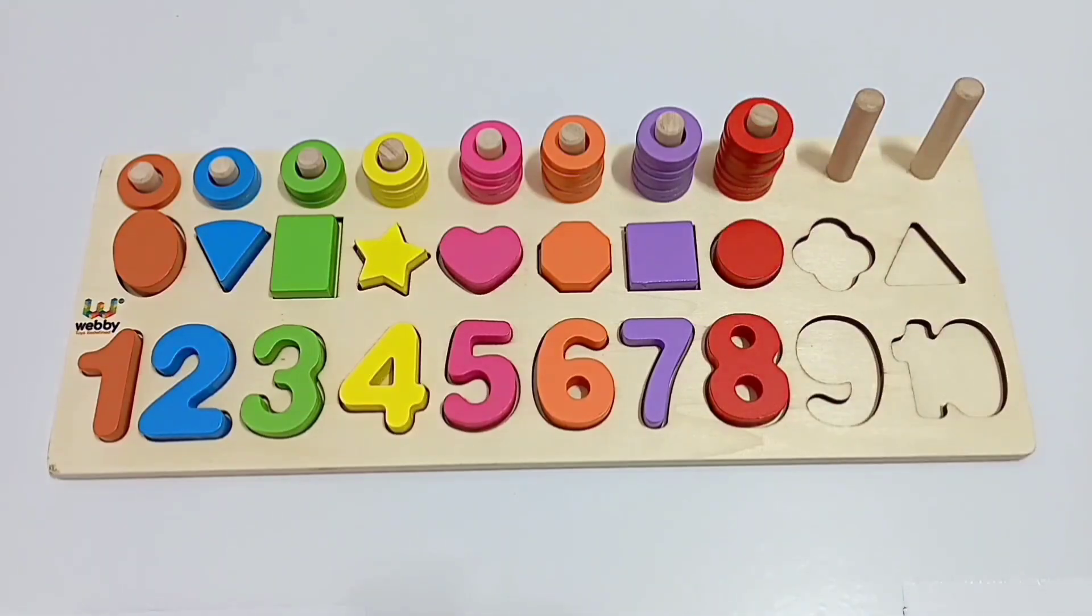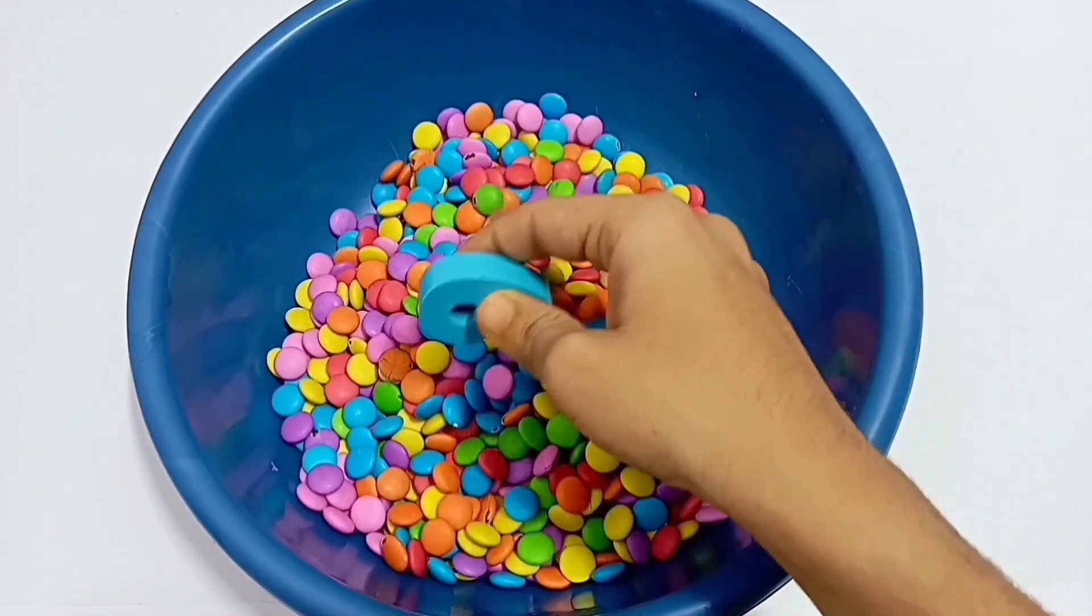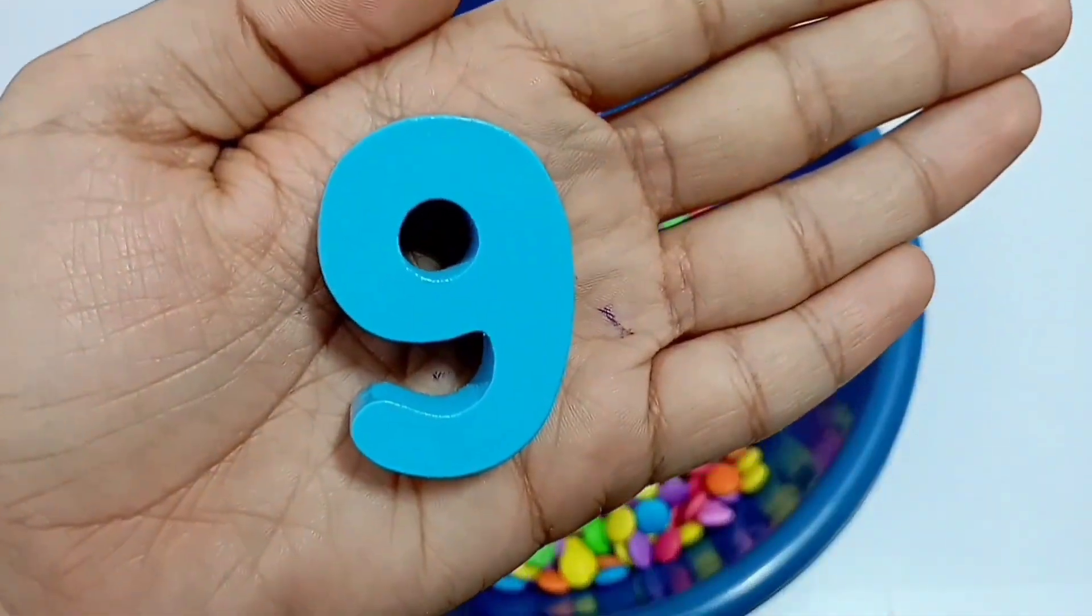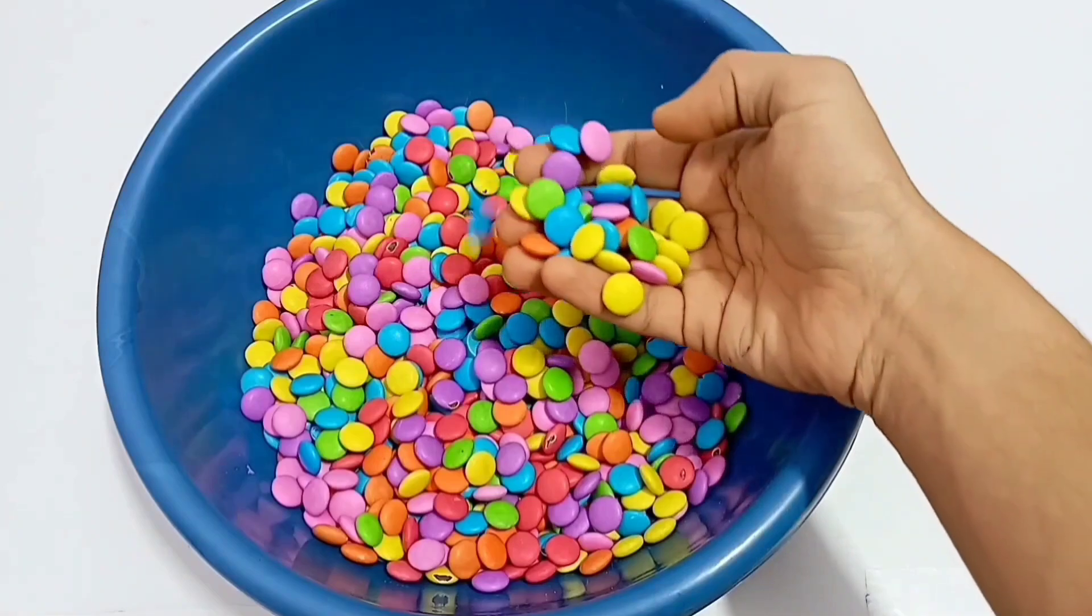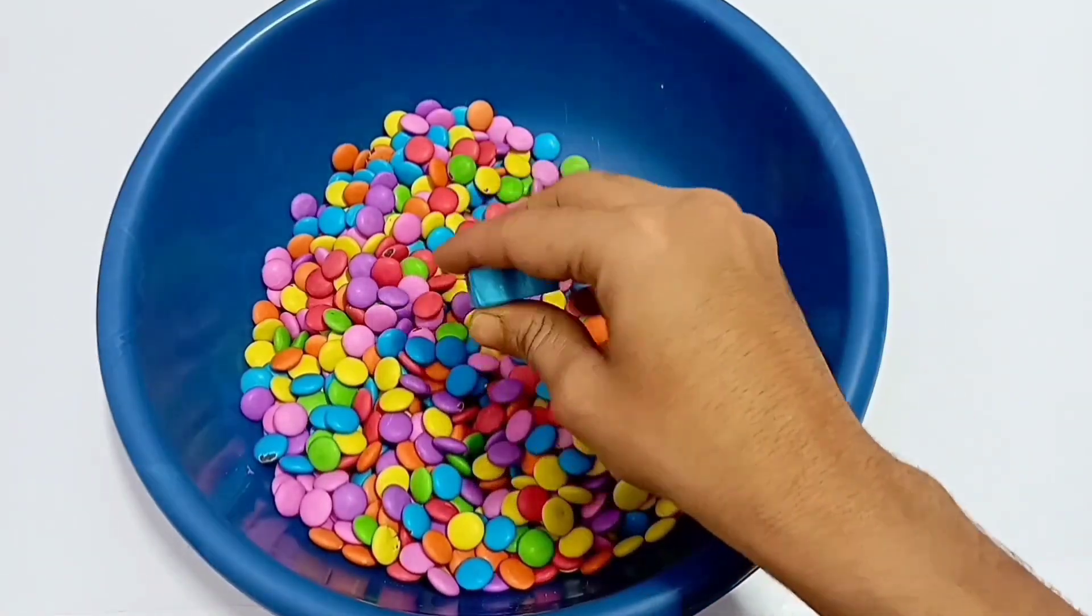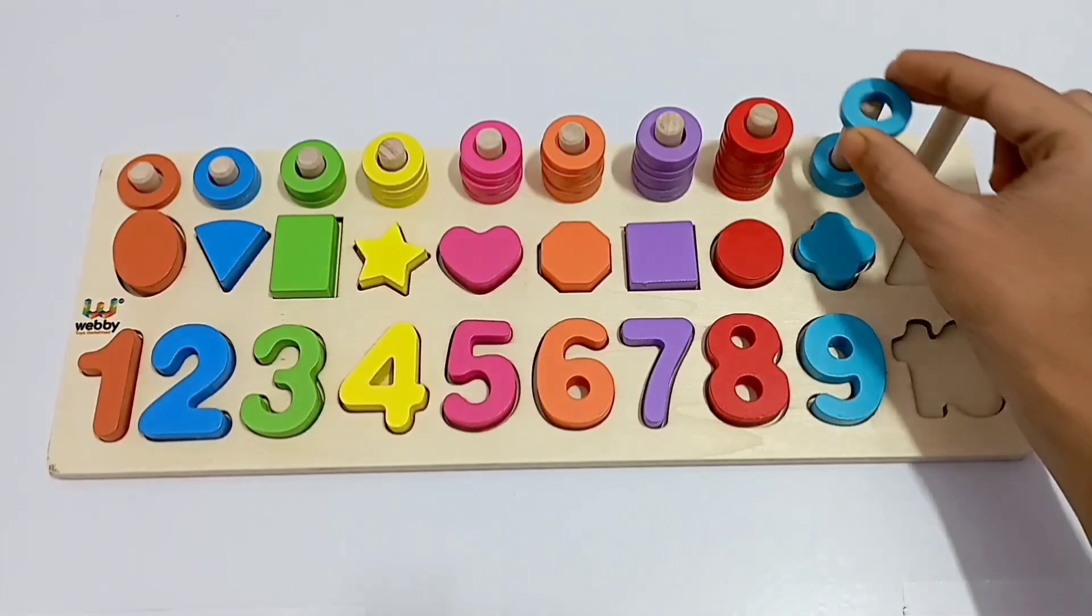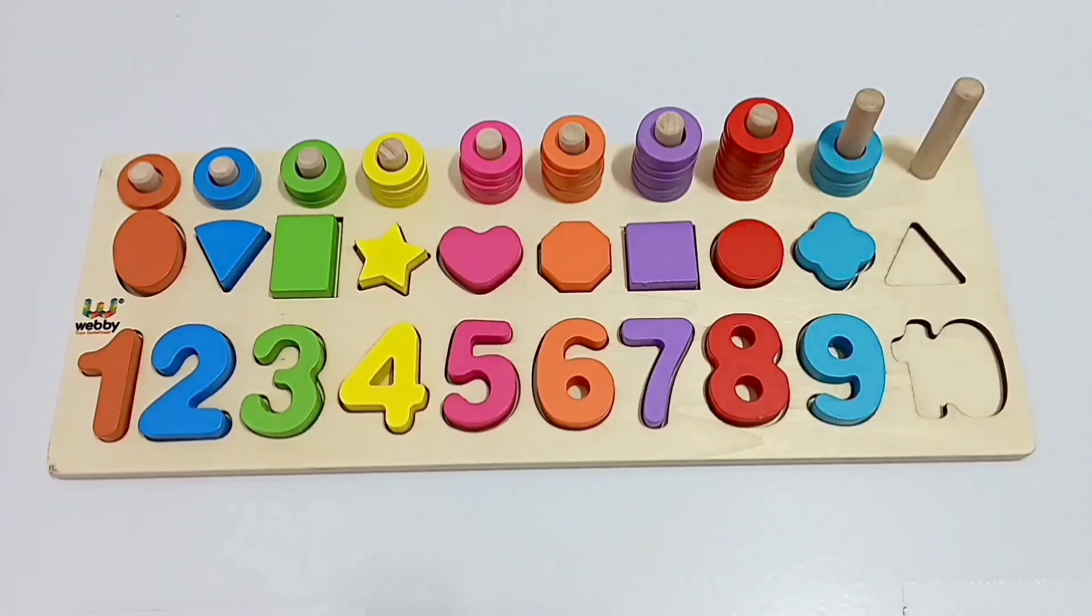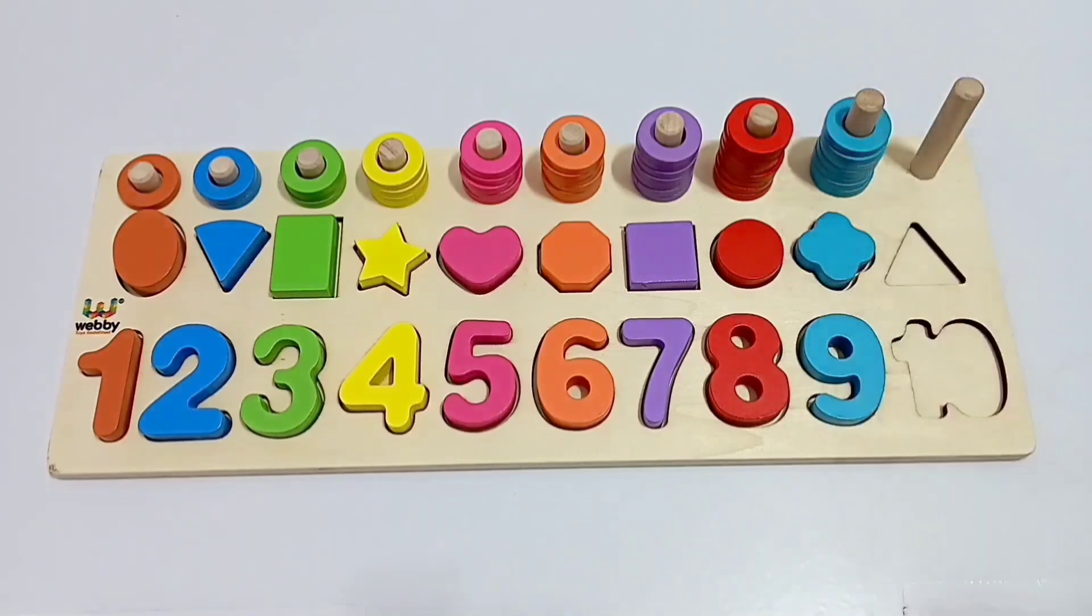Seventeen. Eighteen. Nineteen. Twenty. Twenty-one. Twenty-two. Twenty-three. Twenty-four. Twenty-five. Twenty-six. Twenty-seven. Twenty-eight. Twenty-nine. Thirty.